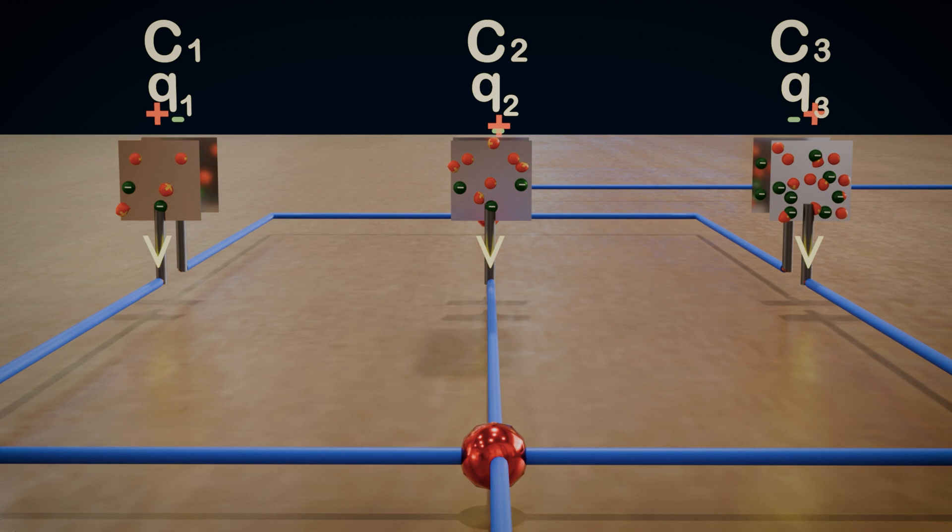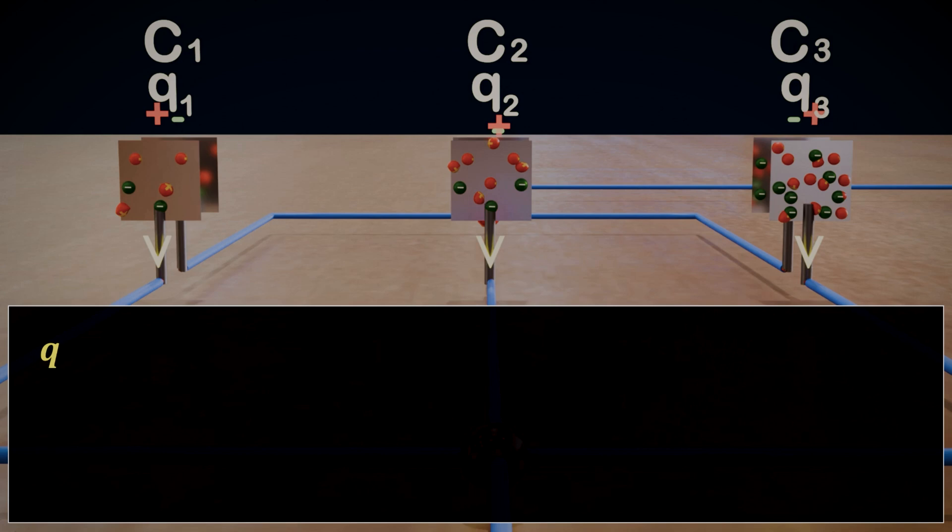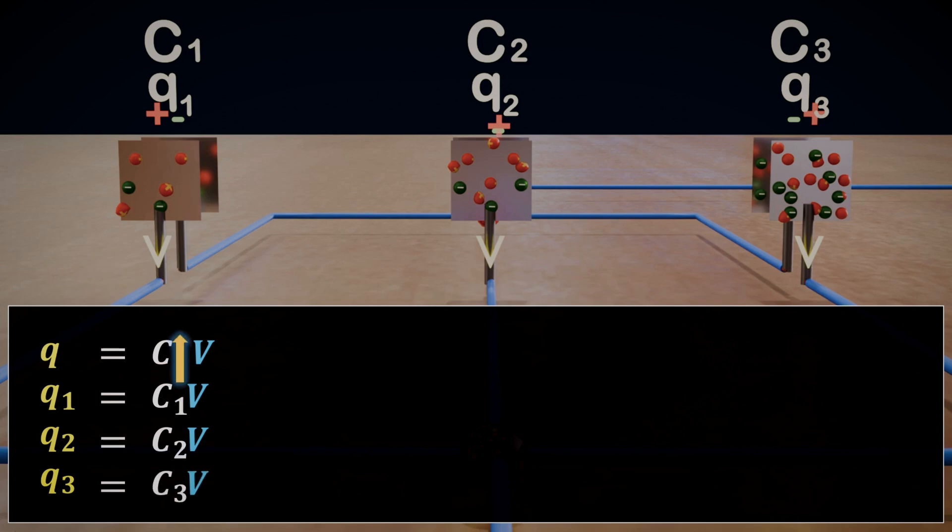Now, how do we calculate the charge stored in each capacitor? Well, it's actually quite simple. The charge on a capacitor is equal to its capacitance multiplied by the voltage across it. So, for C1, the charge is C1 times V. For C2, it's C2 times V. And for C3, it's C3 times V. Capacitors with higher capacitance will store more charge, while those with lower capacitance will store less.